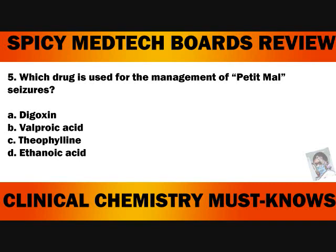Number 5. Which drug is used for the management of petit mal seizures? A. Digoxin. B. Valproic acid. C. Theophylline. Or D. Ethanoic acid. The answer to number 5 is letter B, Valproic acid.